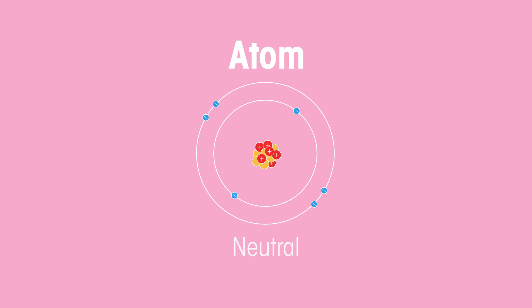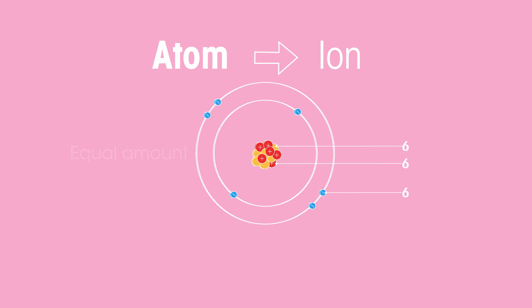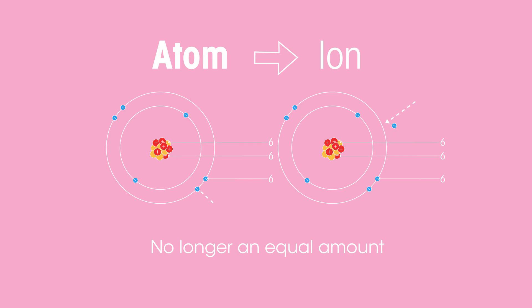When an atom is neutral, the number of protons and electrons are equal. But when an atom has become an ion, the number of protons and electrons are no longer equal. The number of electrons does not equal the atomic number anymore.